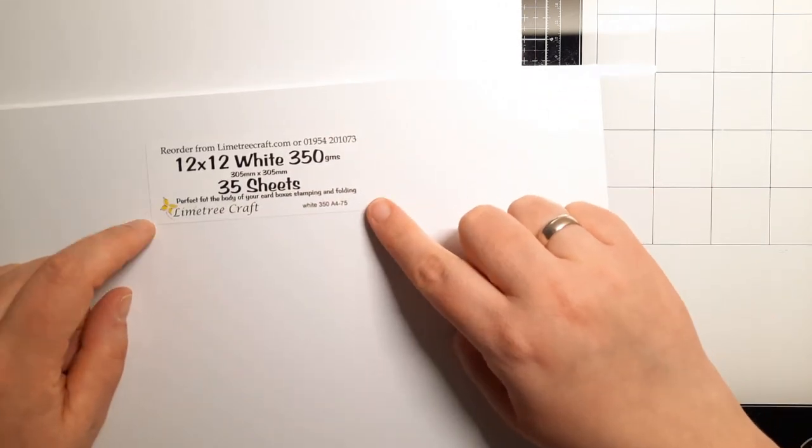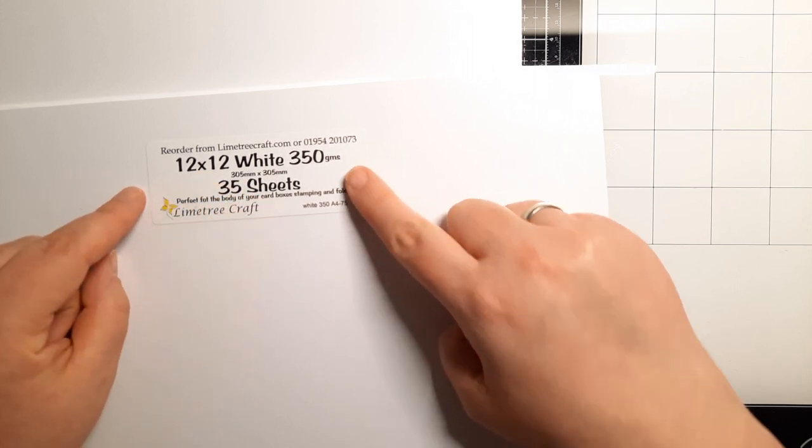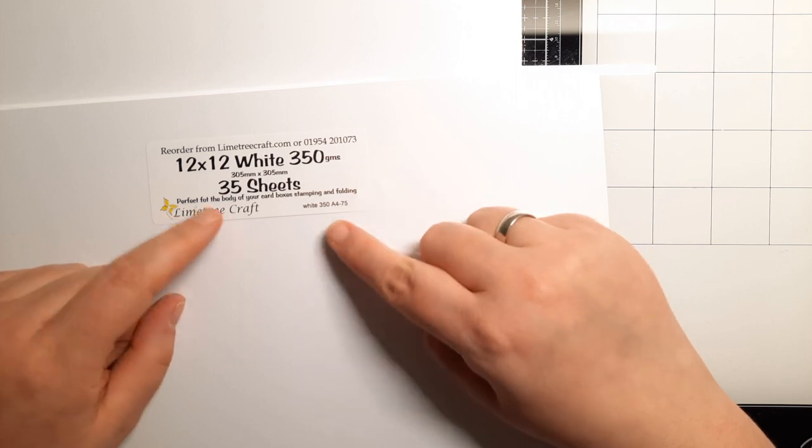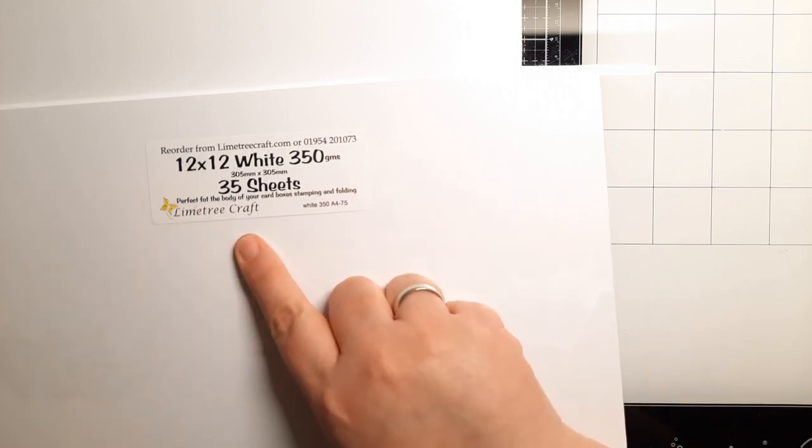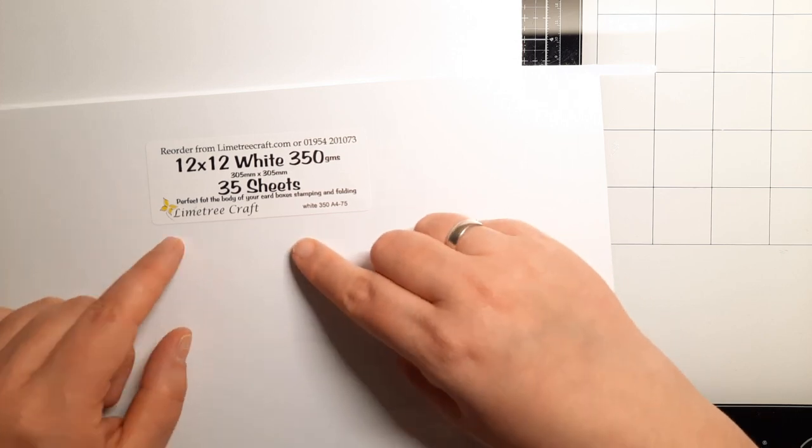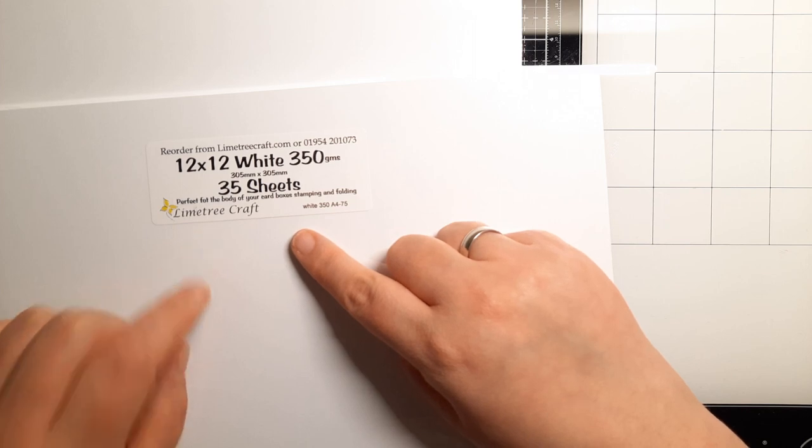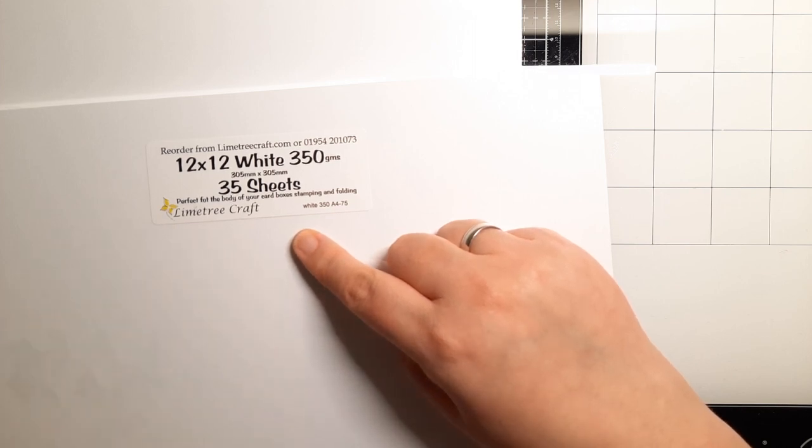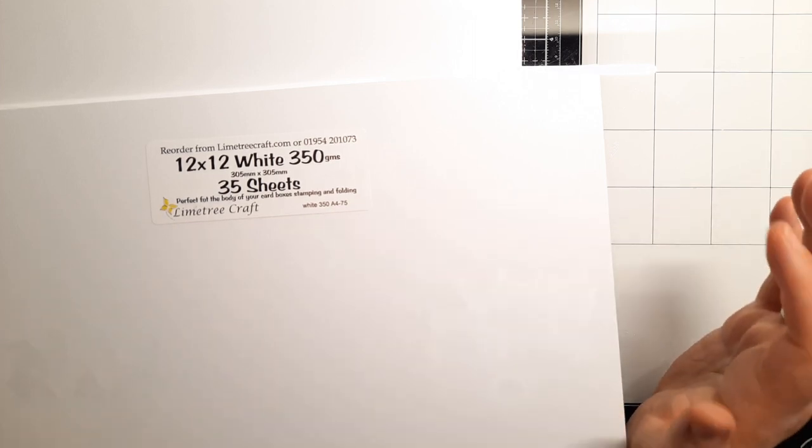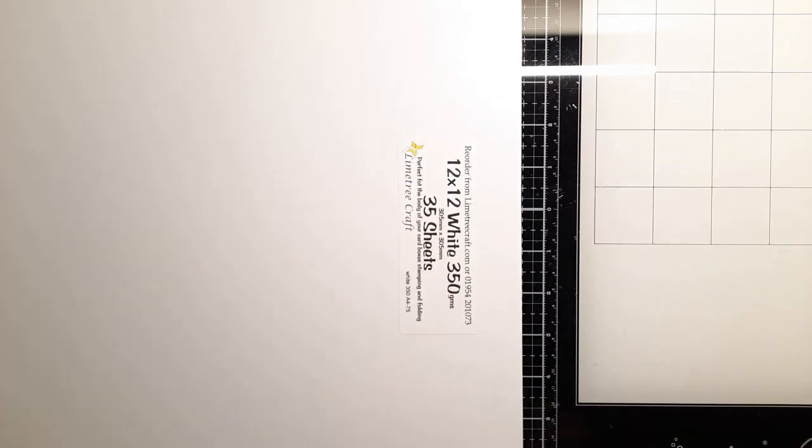And now this is my totally favorite card when it comes to Scan and Cut machine because it's twelve by twelve inches, 350 GSM, and there are 35 sheets. And these, all the products you can see they come from Lime Tree Craft. You can check them online, they've got a massive variety of beautiful card stock, but I wanted just to go and get this one. That was the whole idea.